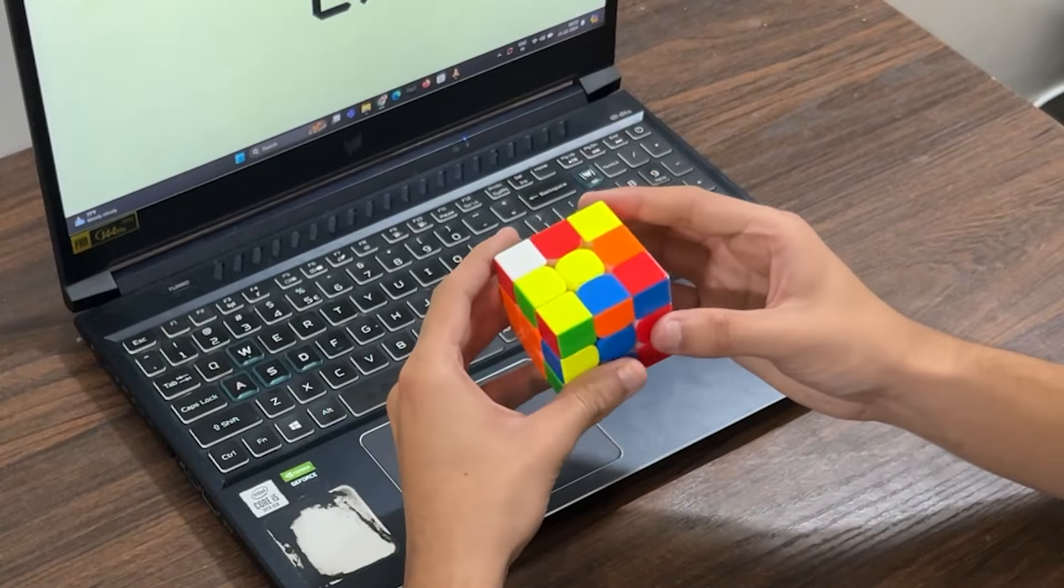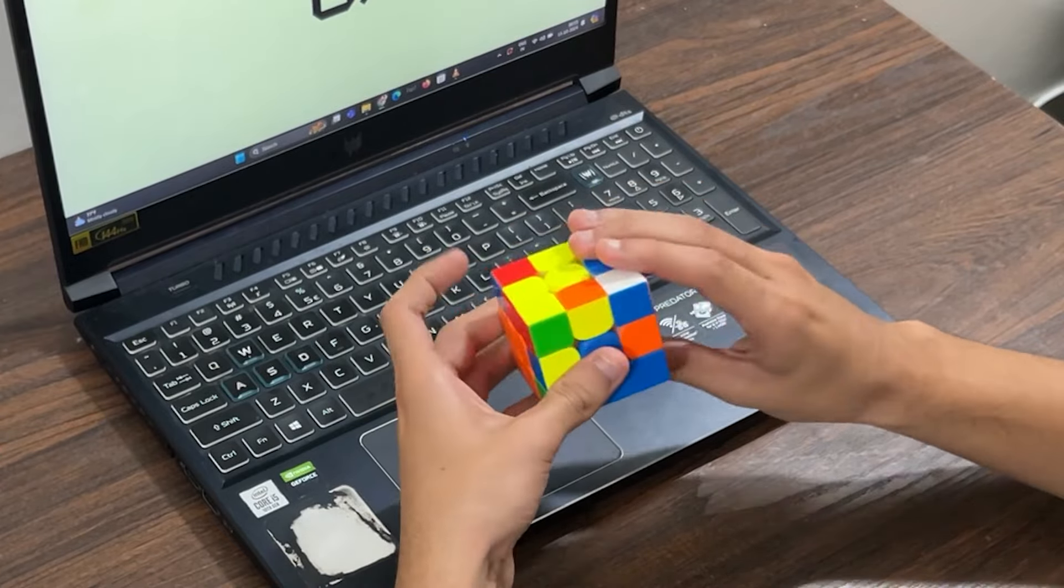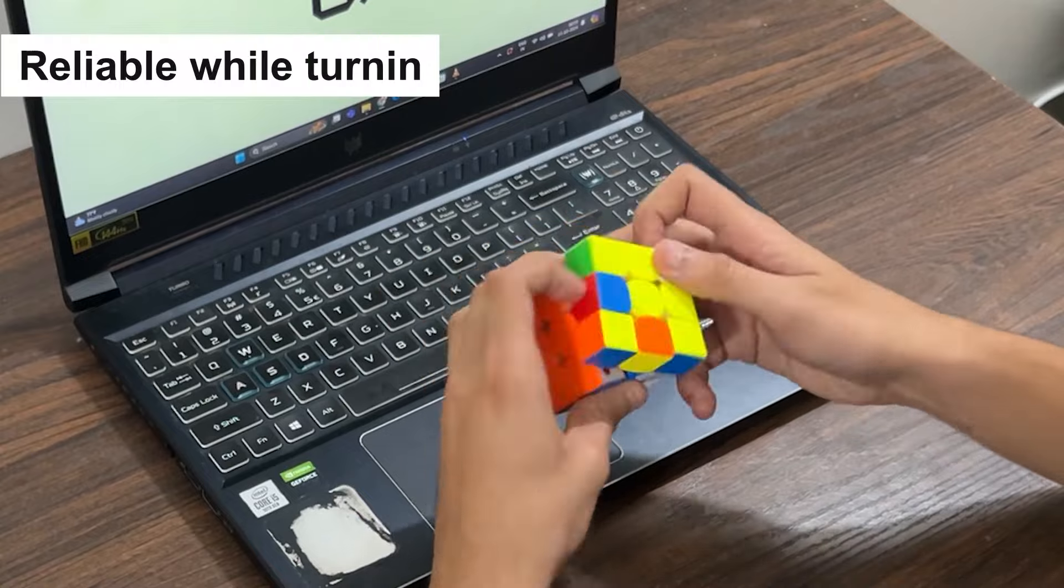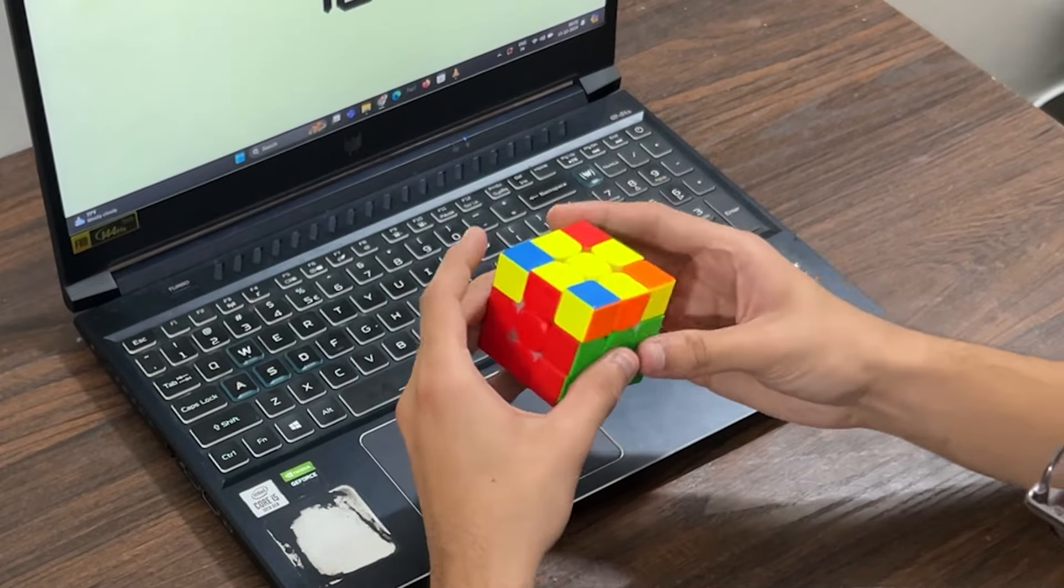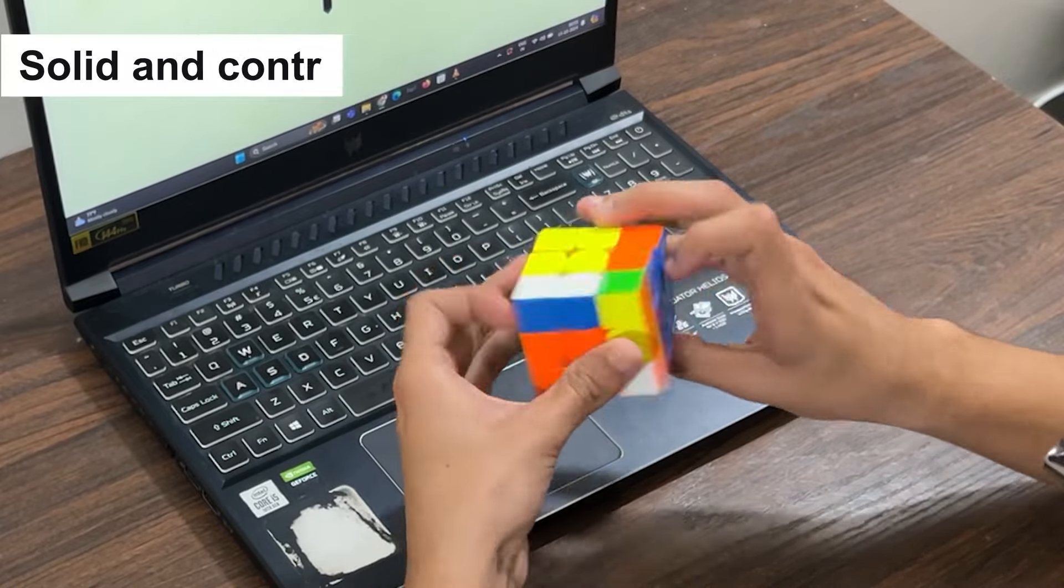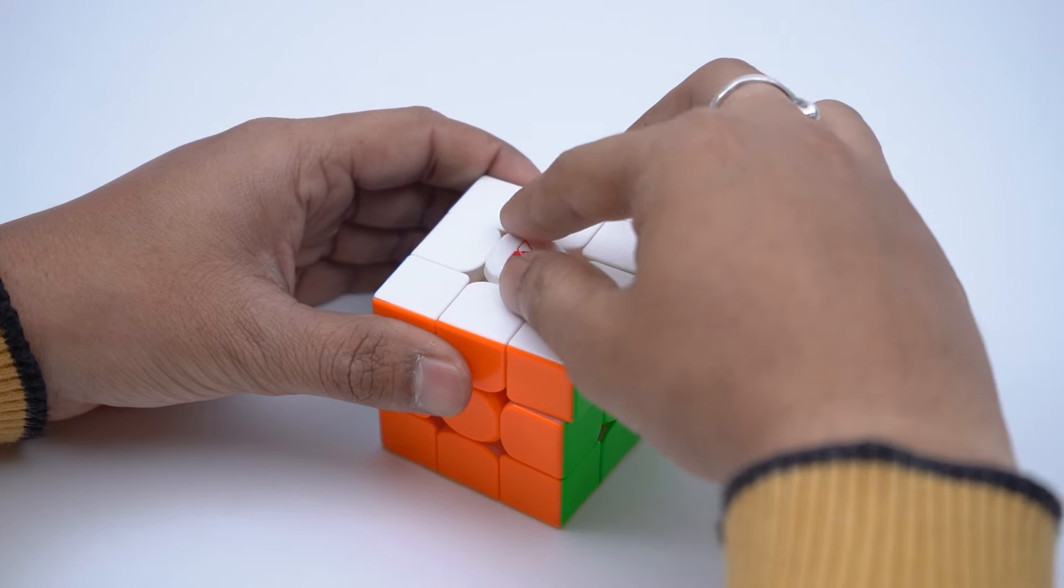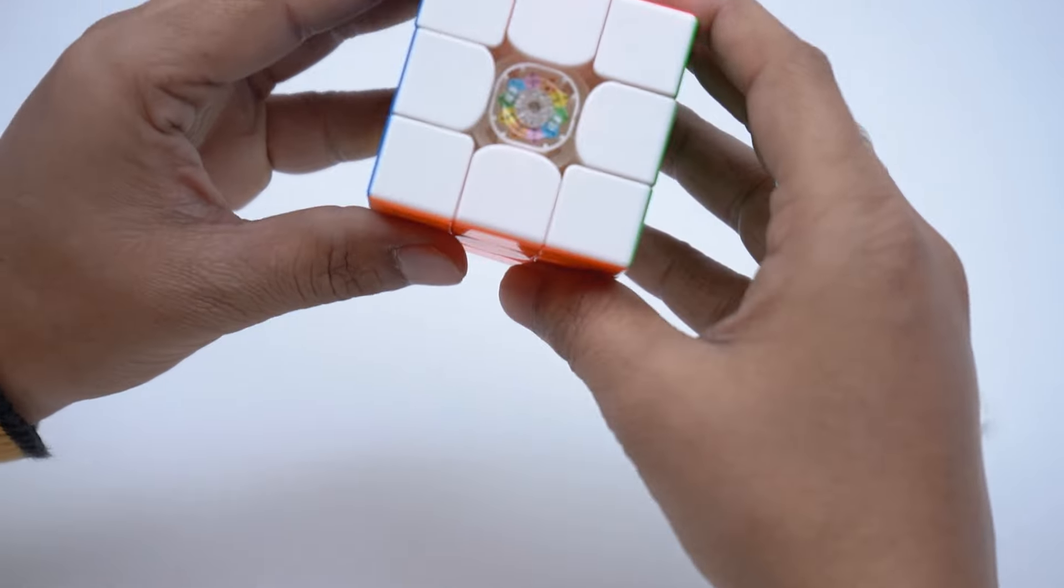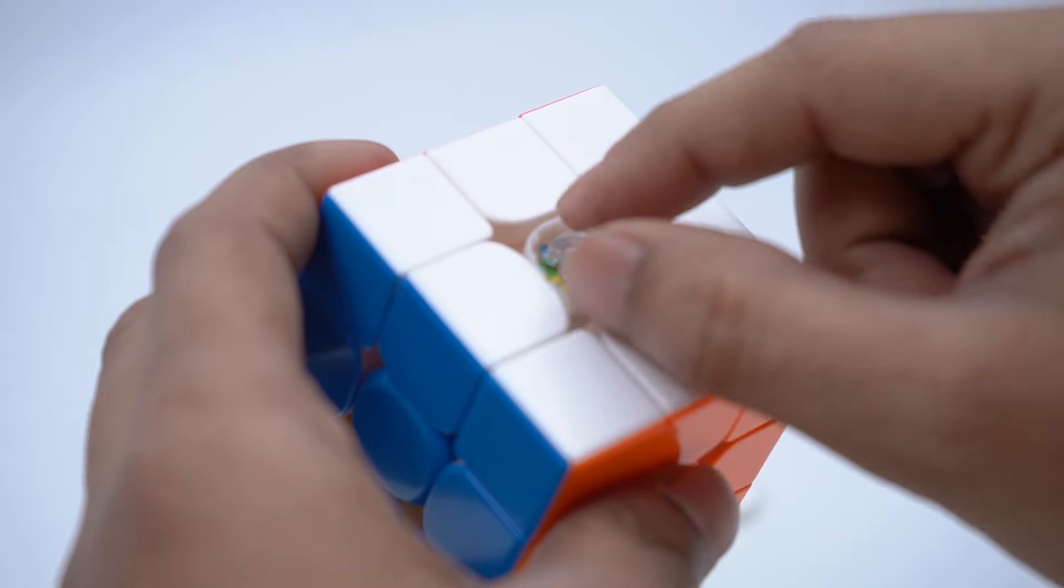The Tornado V4 flagship model performs better than the Pioneer version in my opinion, and the Tornado V4 flagship version seems more reliable while turning, something that the Pioneer version does not have. While it may not be as fast as the WRM V10, it provides a solid and controlled performance that some cubers may prefer. Also, the Tornado V4 requires much more setup than the WRM V10, but the setup is completely worth it.